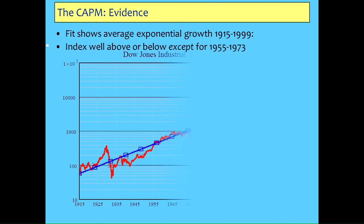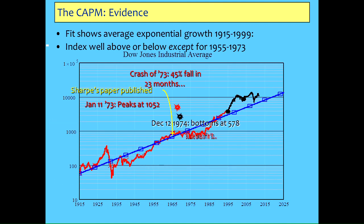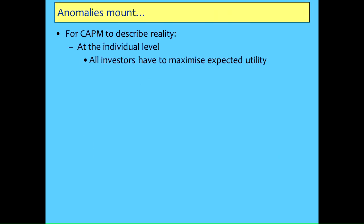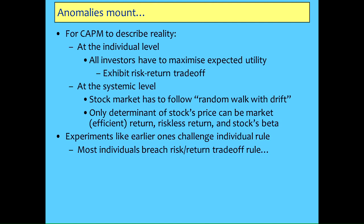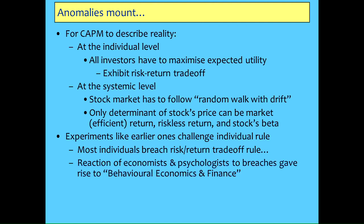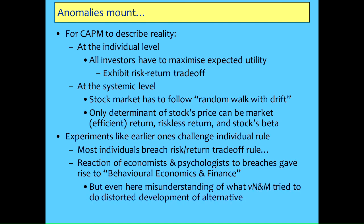It did fit the data for a while but now clearly doesn't - there are all sorts of holes in it. For CAPM to work at the individual level, we have to all agree about all shares and all show a risk-return profile in our behavior, and the market has to follow a random walk with drift. The only things that can determine value are the efficient market return, the riskless asset, and the beta that correlates individual shares with the market return. The individual stuff is nonsense, and that's what led to the whole behavioral finance area. The great pity is that most of those people misunderstood what von Neumann and Morgenstern were trying to achieve.